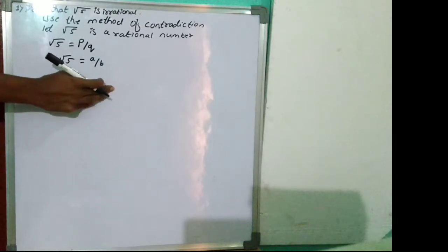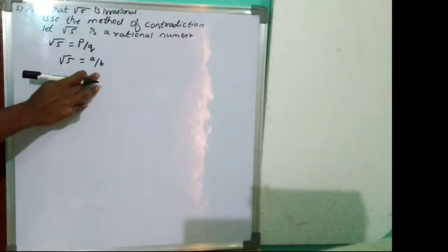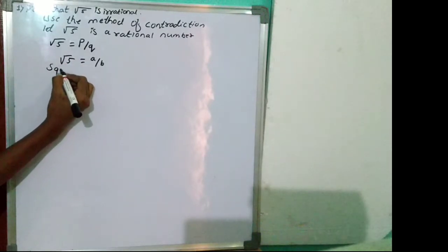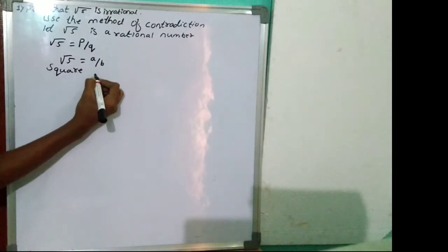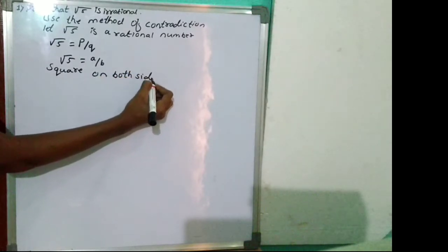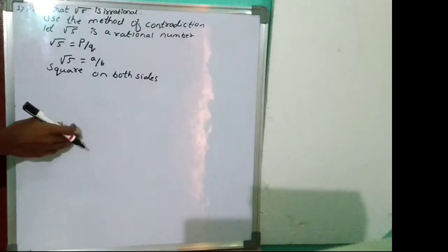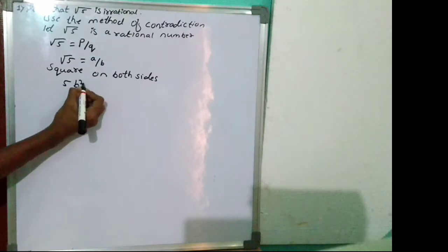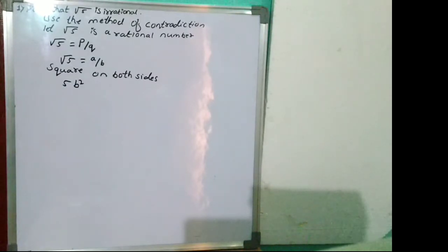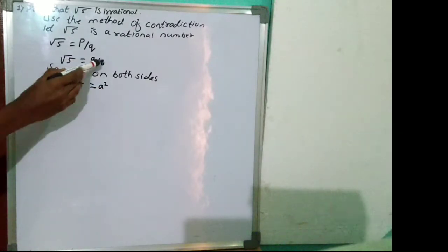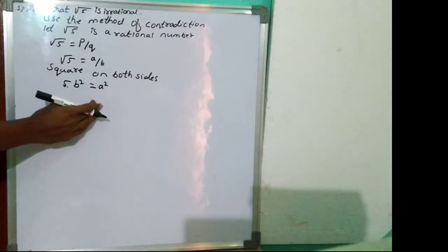Squaring both sides, we get 5b squared is equal to a squared.